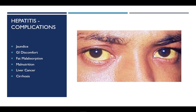Acute hepatitis generally does not cause permanent liver damage. However, it can easily and rapidly lead to malnutrition because of the insult of the infectious process coupled with inadequate food intake. A very distinct symptom of liver disease is jaundice, which is a yellowing of the skin caused by bilirubin buildup in the blood. With jaundice, the whites of the eyes will also turn yellow.